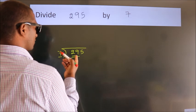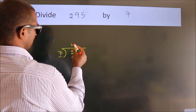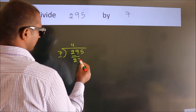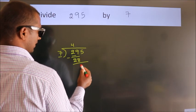A number close to 29 in 7 table is 7 fours, 28. Now we should subtract. We get 1.